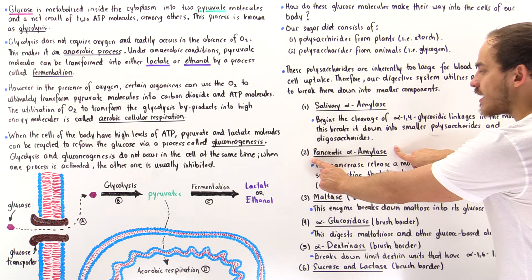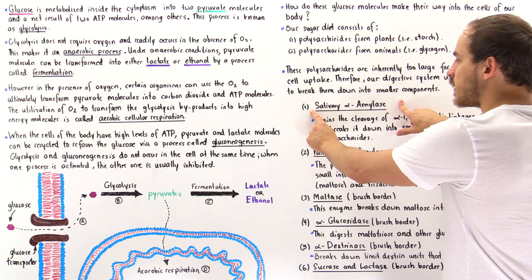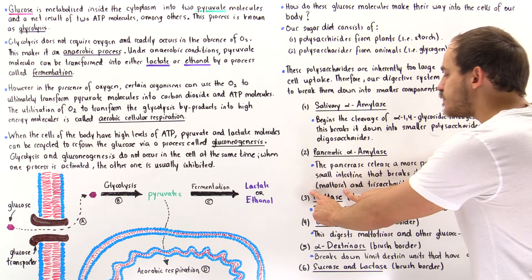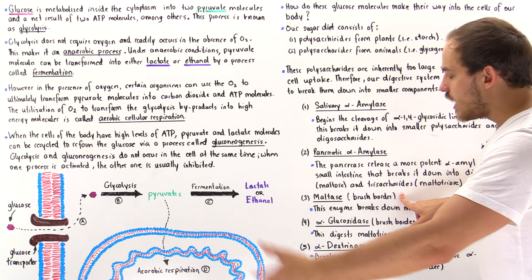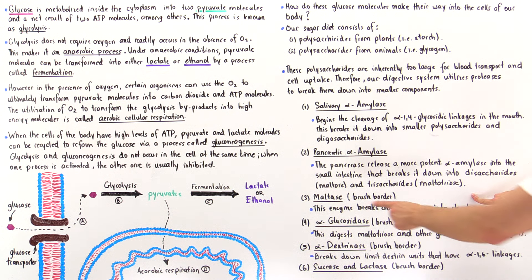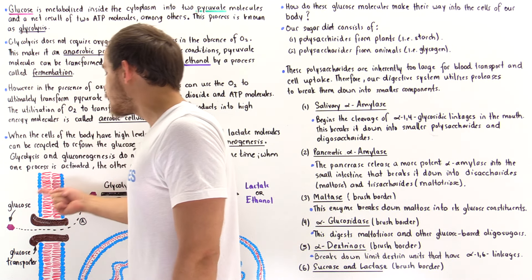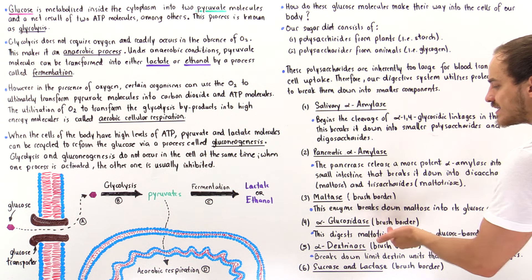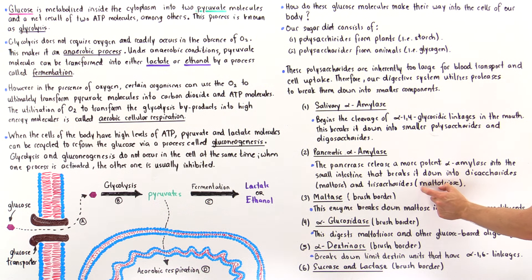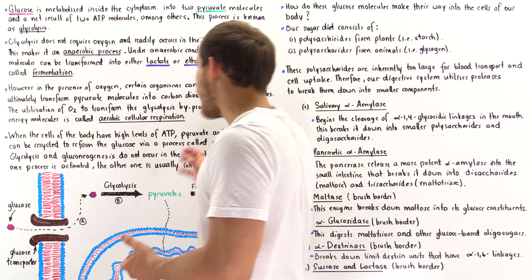The pancreatic alpha-amylase breaks down oligosaccharides and polysaccharides that could not be broken down by salivary alpha-amylase into maltose or maltotriose. These maltose molecules are broken down by maltase at the brush border epithelium of the small intestine. Once maltose is broken down into its glucose constituents, the glucose can be taken up by the cell using a special type of glucose transporter. Alpha-glucosidase breaks down maltotriose into the three constituent glucose molecules.